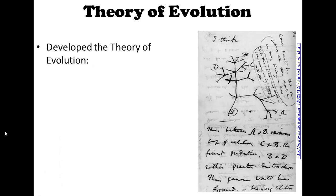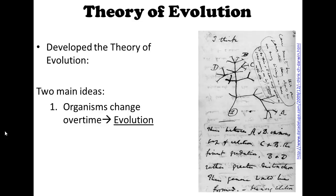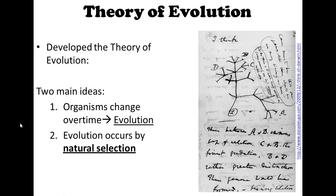He developed the theory of evolution, and there were two main ideas in his theory. One is that organisms change over time — this is what evolution is. The second main idea was that evolution occurs by natural selection, which is something we're going to talk about a little later. That's how the change comes about — through natural selection.